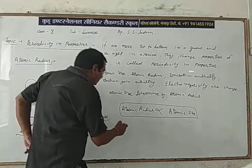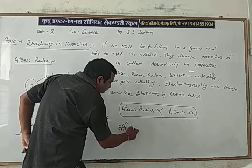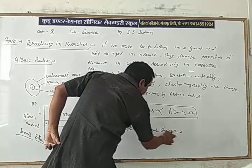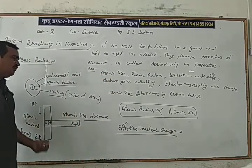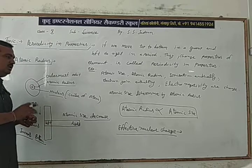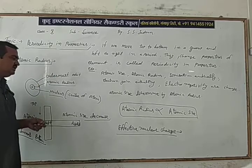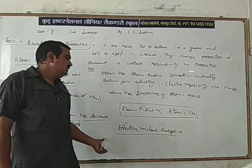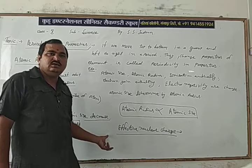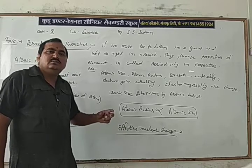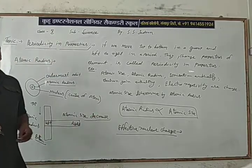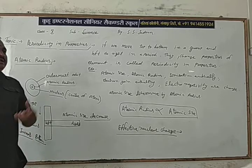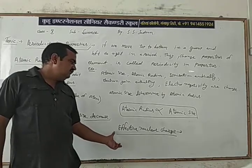Now, the effective nuclear charge — when we move top to bottom in a group, the distance from the nucleus increases. Because of this increased distance, it becomes easier to remove the electron. This means the attraction force of the nucleus on the outer electron decreases. Effective nuclear charge is the attraction force of the nucleus on the outermost orbital electron.